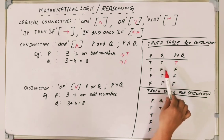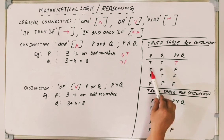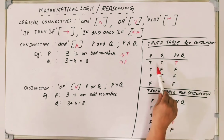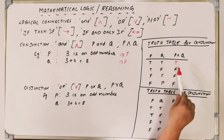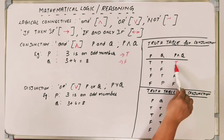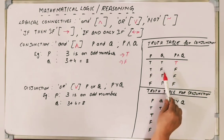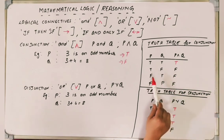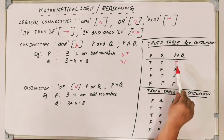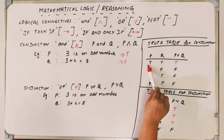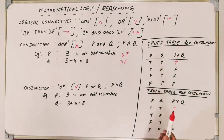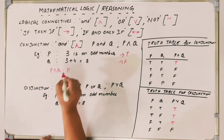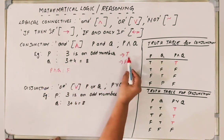A truth table tells us the combinations of truth values for the statements P and Q. For conjunction, if P and Q are both true, only then P conjunct Q is true. If one of the statements is false, the result is false. If both statements are false, the result is also false. So P conjunct Q is false in this case because P is true but Q is false.